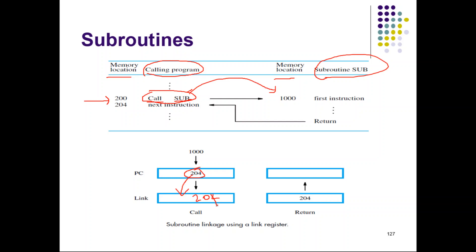Then whatever address is specified in the CALL — the address is 1000 — that will be moved to PC. So these two things happen during execution of CALL: first, the original content of PC (204) will be moved to the link register; and the content of PC will be replaced with the starting address of the subroutine (1000), which is specified in the CALL instruction. When the RETURN instruction is executed, the content of the link register — which is 204 — will be moved back to PC, so execution resumes from instruction 204. This is how subroutine CALL and RETURN work.